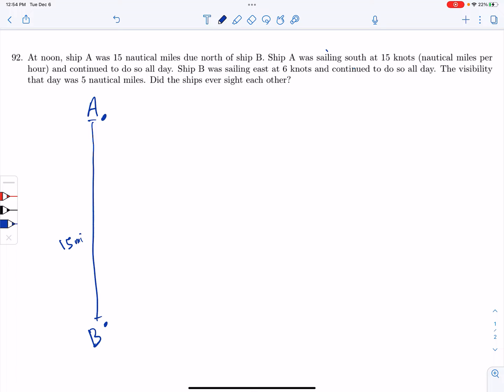And then it's traveling south at 15 miles an hour. And then it says ship B is traveling east at six miles per hour. And it says the visibility that day was five nautical miles. Did the ships ever sight each other? So in other words, were these ships ever within five miles of each other?